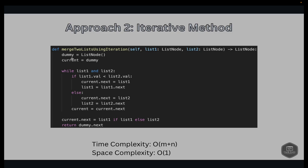Complexity analysis for the iterative approach: time complexity is O(m + n), where m and n are the lengths of list1 and list2. Space complexity is O(1), since no additional space proportional to the input size is used.